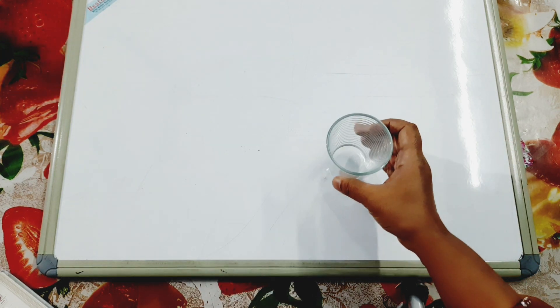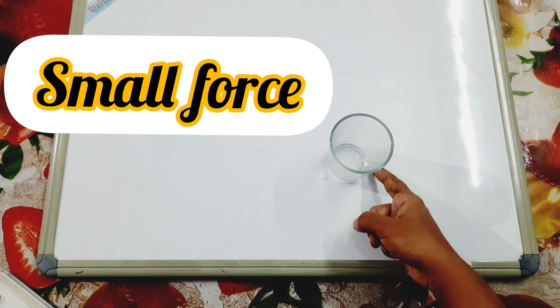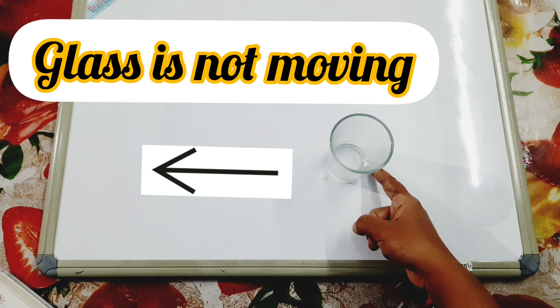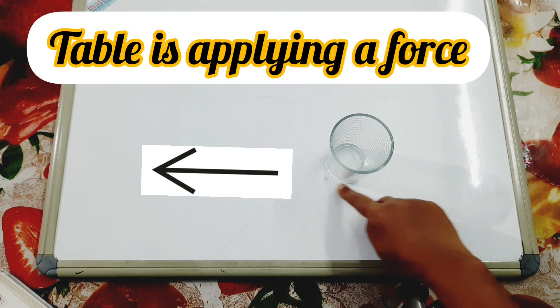When I keep this glass tumbler on the table and apply a small force, you can see that after applying a very small force, this glass tumbler is not moving. Why? Because this table is also applying a force on the tumbler in the opposite direction.